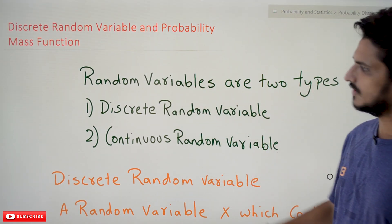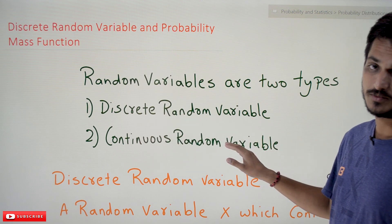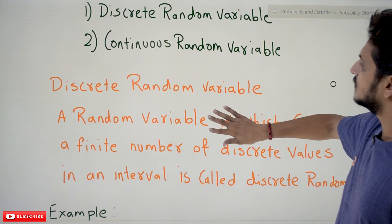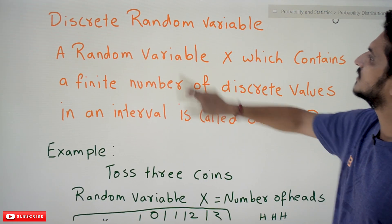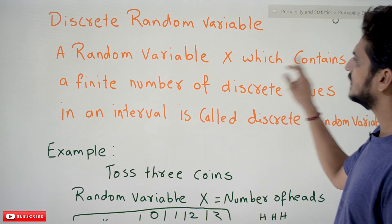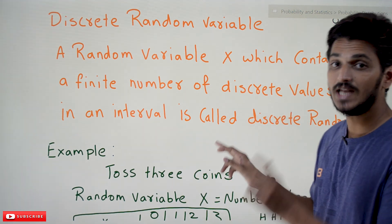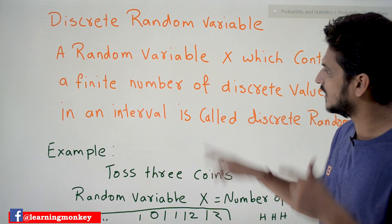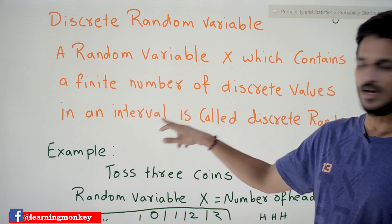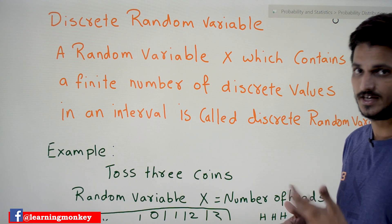Random variables are of two types: the first one is discrete random variable and the second one is continuous random variable. In this class we are going to understand what discrete random variable means. The definition: a random variable X which contains a finite number of discrete values in an interval is called a discrete random variable.